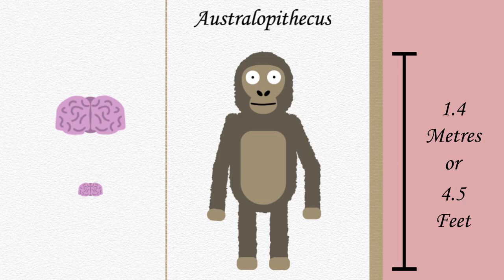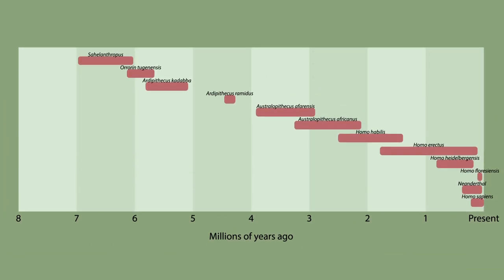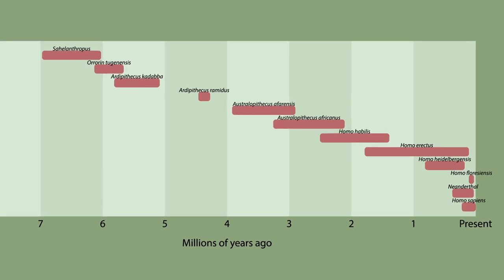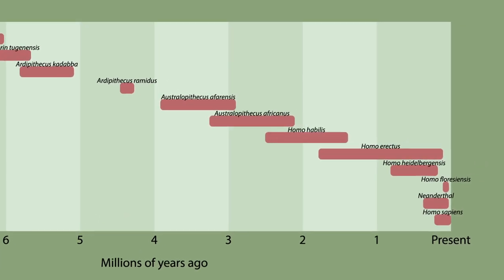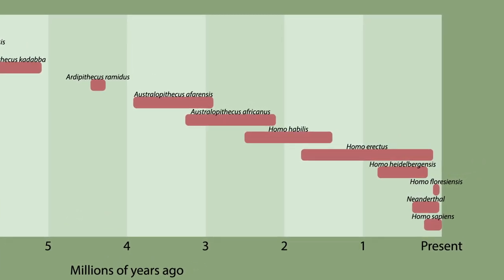It is believed that the Australopithecus is the common ancestor of the genus Homo, which of course includes us, Homo sapiens, along with other now-extinct human species such as Homo habilis, Homo erectus and Neanderthals.